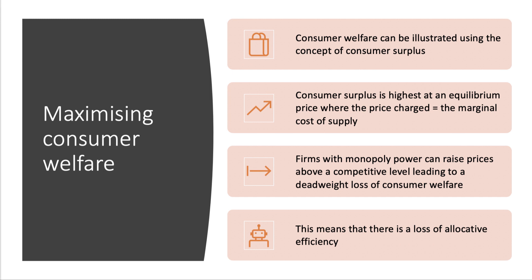Consumer welfare is an important concept and it refers to the outcomes for consumers from market activity. Typically, consumer welfare can be illustrated diagrammatically using the concept of consumer surplus — that's the difference between what people are willing and able to pay and what they actually do pay in the market. Consumer surplus is highest at an equilibrium market-clearing price where the price consumers are charged reflects the marginal cost of supply.